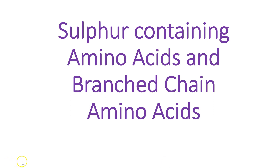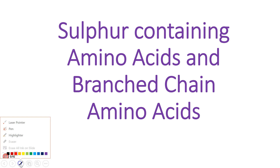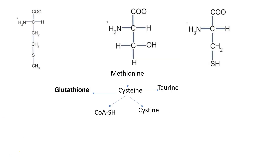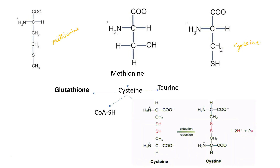Today we'll be talking about the sulfur-containing amino acids and the branched-chain amino acids. There are three major sulfur-containing amino acids: methionine, cysteine, and cystine. If you look at the methionine structure, it has a sulfur atom which is sandwiched between two carbons. This is called the thioether linkage.